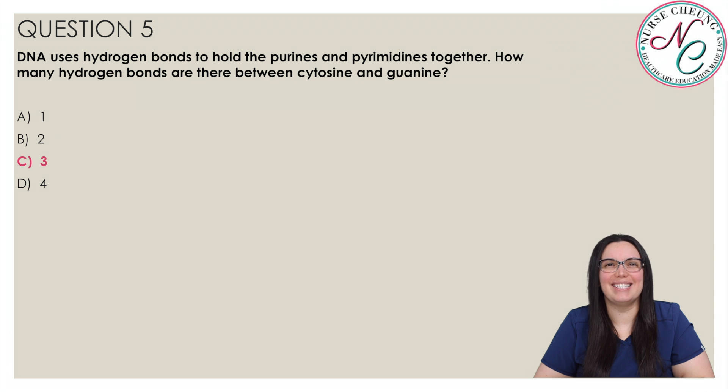And the correct answer is C, 3. There are only a certain number of possibilities of base pairs due to the unique nature of the hydrogen bonds that hold them together. Cysteine bonds with guanine using 3 hydrogen bonds. Adenine and thymine require only 2 hydrogen bonds, as do adenine and uracil in RNA.